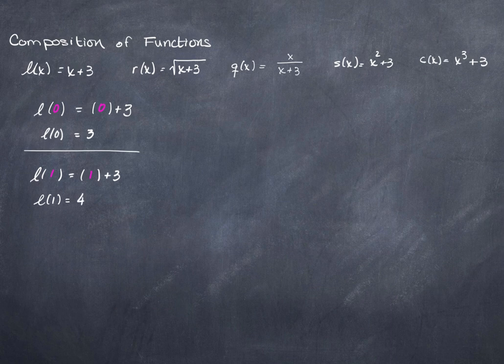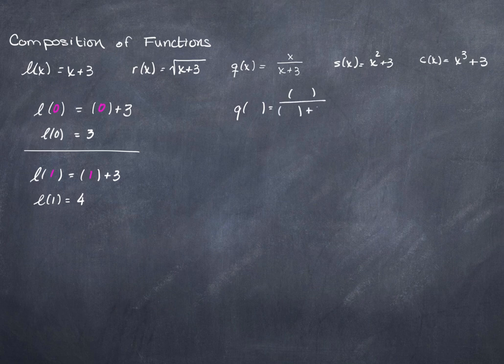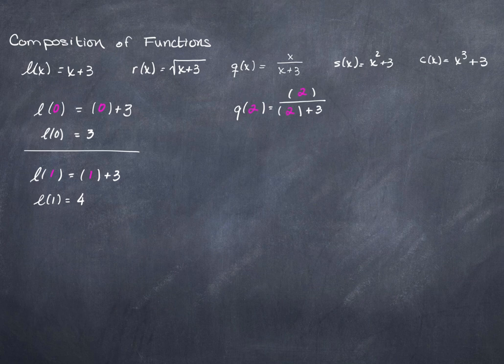This is a pretty basic, simple task to do. Let's do one more with a different function — how about Q? Everywhere there was an x, I'm going to plug in a value. Let's do Q of 2. Q of 2 is the function Q of x when x equals 2. Q of 2 is equal to 2 over 2 plus 3, which is 5. And that's all there is to it.